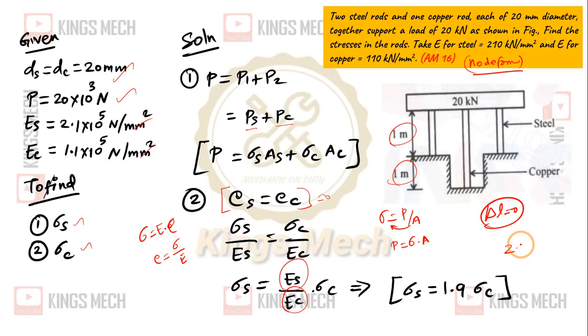This is 2.1 into 10 power 5 divided by 1.1 into 10 power 5. That means, we will get sigma s equals 1.9 sigma c.